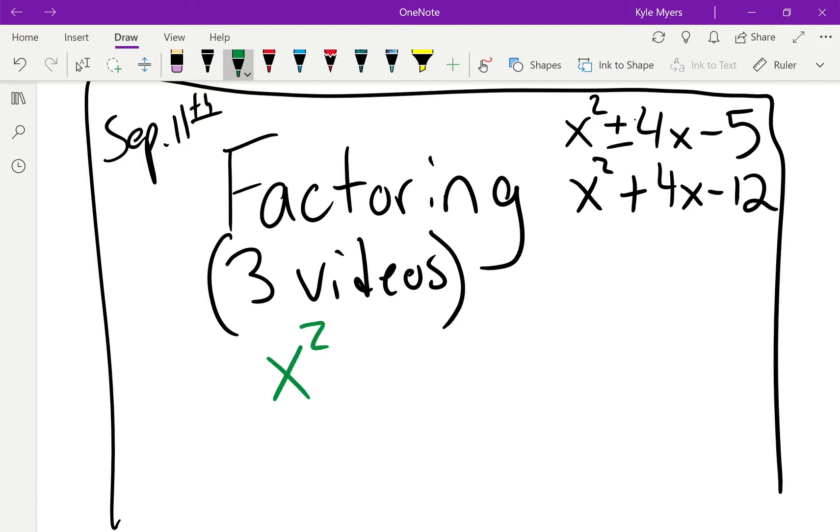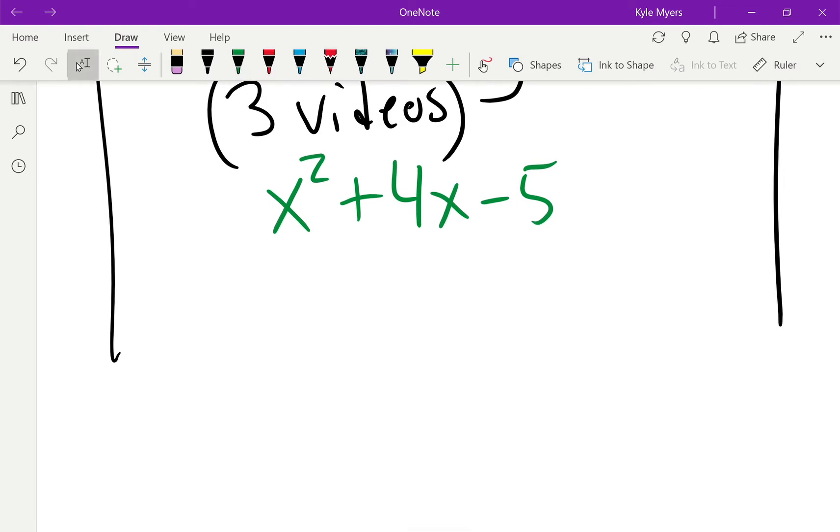We've got x² + 4x - 5. So I need to not worry about the thing in front of x². There's nothing in front of there, right? There's an imaginary 1. Well, it's a real 1, but it's just not written.